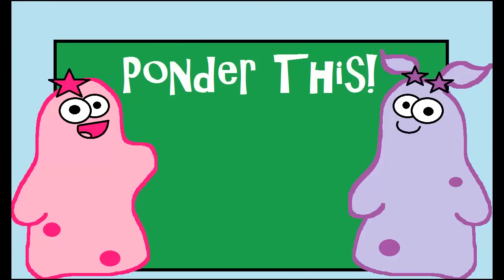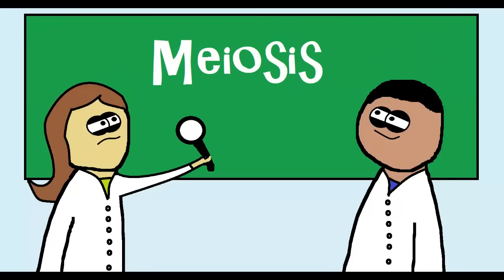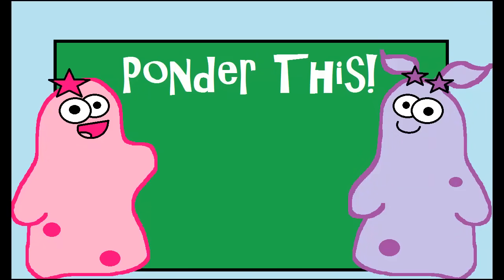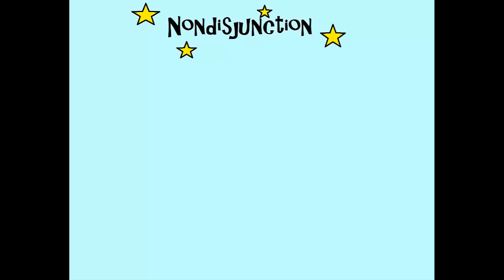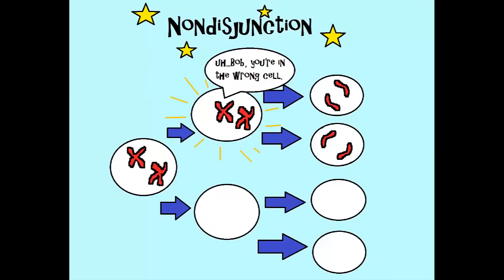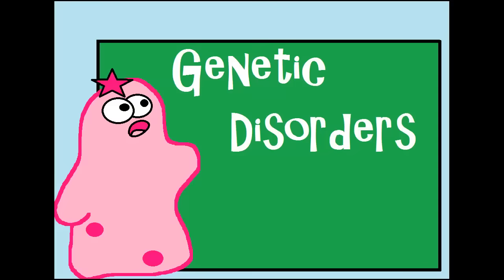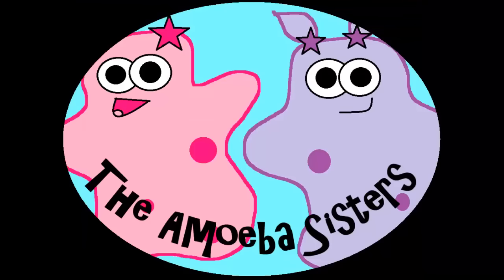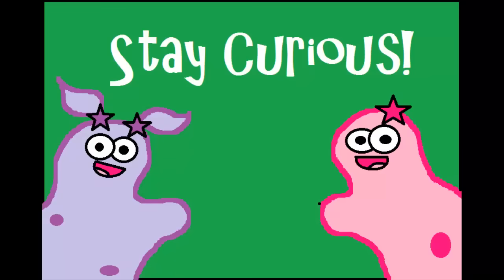Scientists are often studying the process of meiosis because sometimes those chromosomes don't separate correctly — this is called non-disjunction, when a cell receives too many or too few chromosomes. This can contribute to some genetic disorders. When we get to genetic disorders, we'll talk about that relationship with meiosis. That's it for the Amoeba Sisters — stay curious!